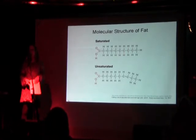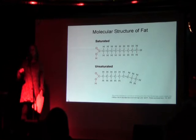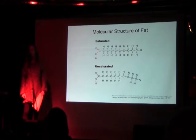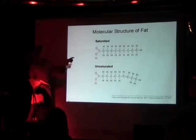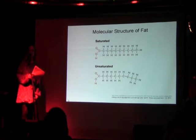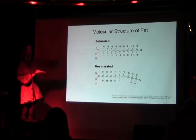A monounsaturated fat, like olive oil, is liquid at room temperature — when you put it in the fridge it tends to coagulate or become more solid. That's mono — it has one kink. A polyunsaturated fat has at least two or more of these kinks. Polyunsaturated fats are more unstable than monounsaturated fats.